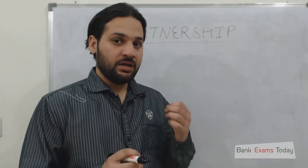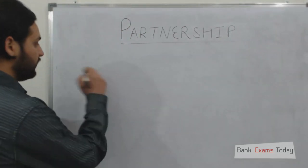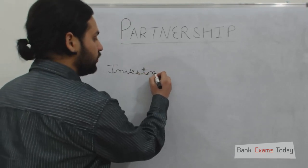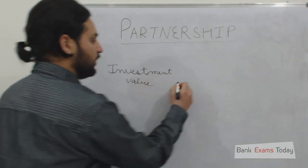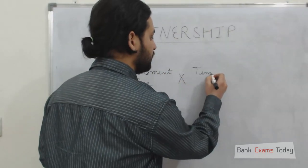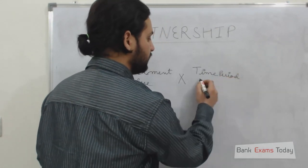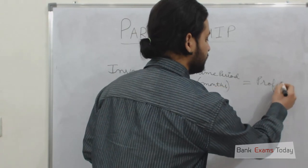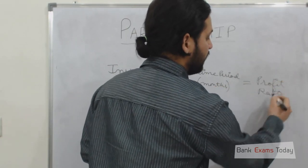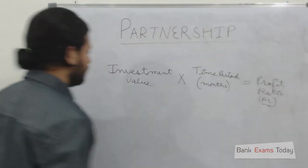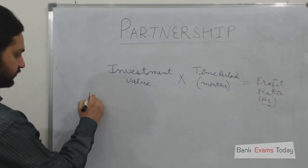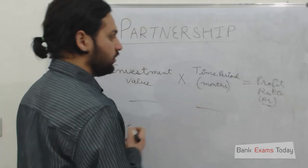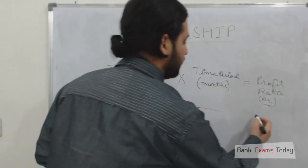So let me explain you my trick by which you can solve any questions related to partnership. Here is a simple equation: investment value multiplied by time period in which money is invested by each partner is equal to profit ratio. This could be a ratio or in rupees or in amount. In case there are two or more partners, you can write like this — A, B, C, D, or whatever. Write the investment value here, multiply by months for the period for which they invested their money, and here is the profit ratio.